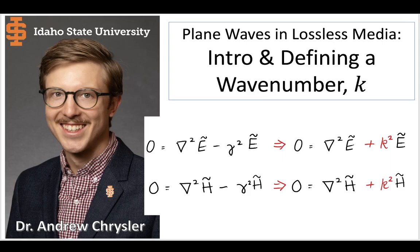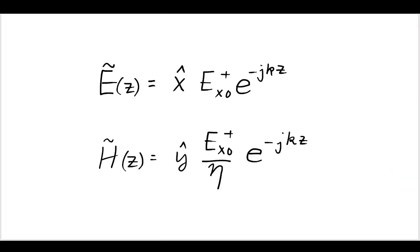We are ultimately going to derive these two equations. These two equations describe the electric field and the magnetic field. They describe a wave that is propagating in the plus z direction, using a wave number k, meaning that we are in a lossless medium.